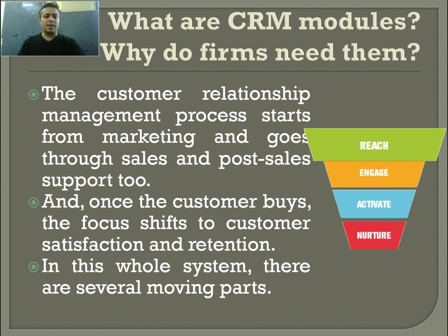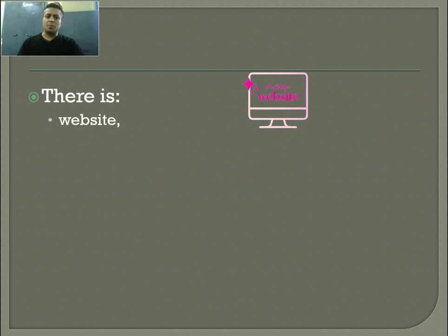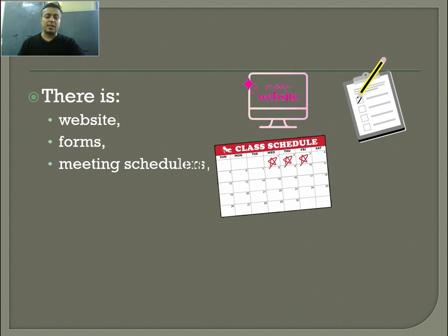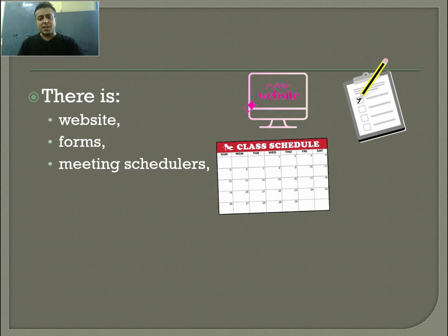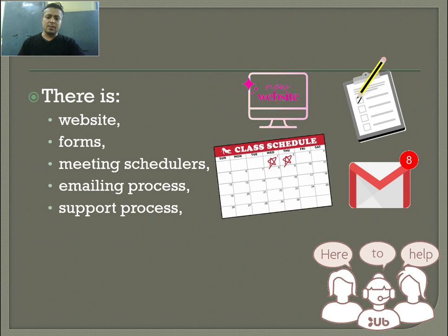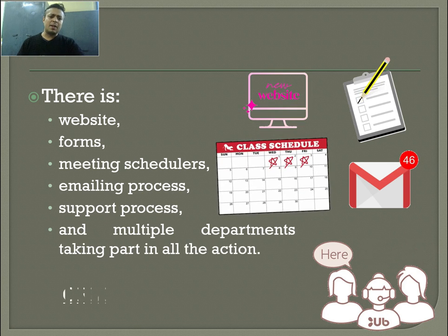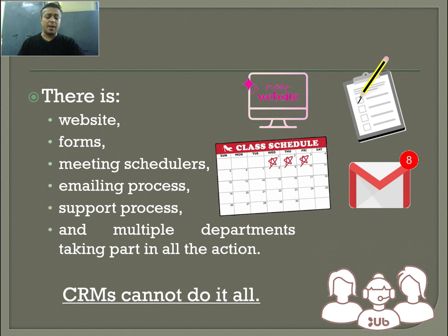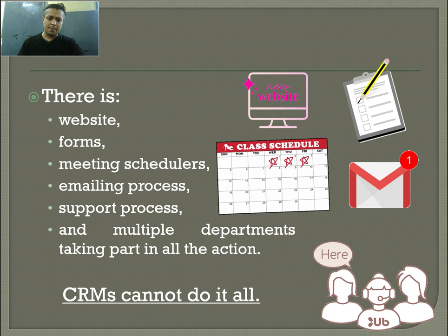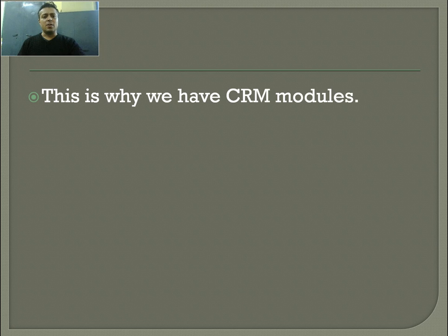In this whole system, there are several moving parts involved. For instance, there is a website, which plays a big role today. In product selling, there are forms, meeting schedulers, the emailing process, and of course the support team and support process. Multiple departments take part in this, and CRM alone cannot do it all — that is the reason why we have CRM modules.